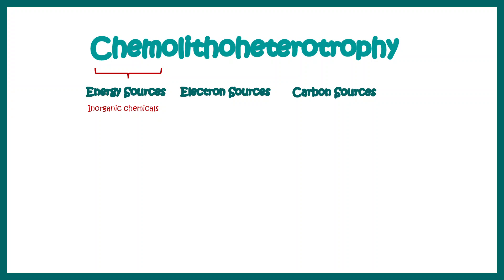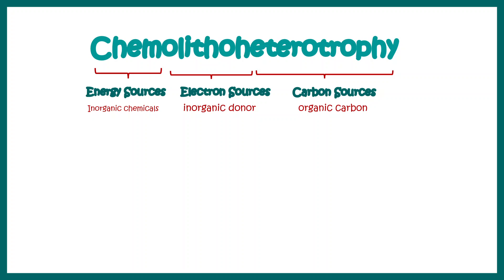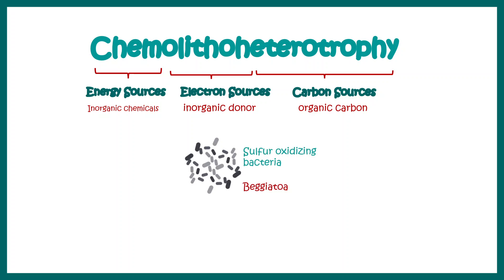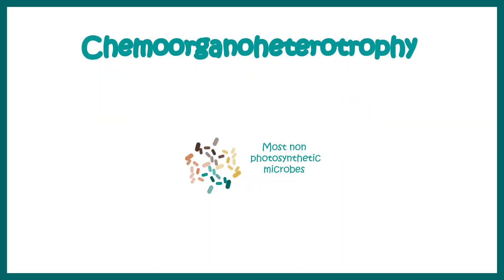Chemo-litho-heterotrophy is the next category. 'Chemo' means inorganic chemicals serve as the energy source, not light. 'Litho' means electron sources are derived from inorganic donors, and the carbon sources come from organic carbon, not CO2. Sulfur-oxidizing bacteria such as Beggiatoa fall under this category.